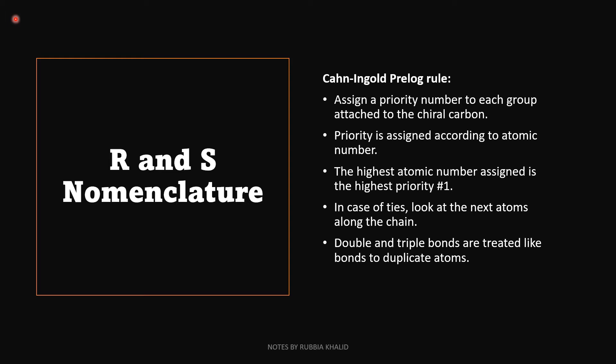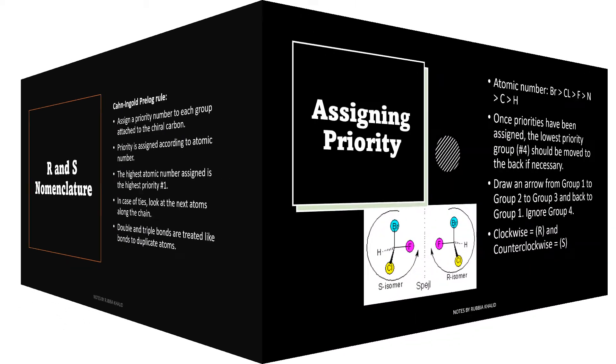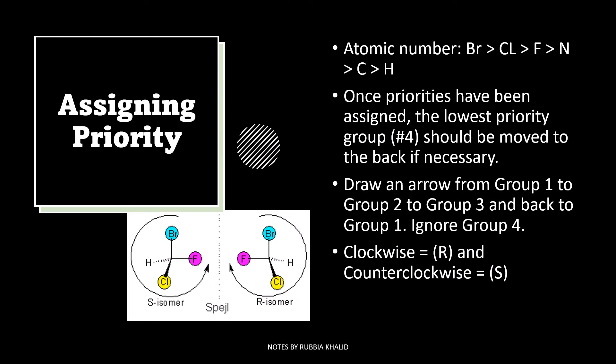In the case of ties, look at the next atom along the chain. Double and triple bonds are treated like the bonds to a duplicate atom. Next is assigning priority. Here you can see a sample priority order. Bromine has higher priority or higher atomic number than chlorine, so bromine has higher priority than chlorine. And then chlorine has higher priority than fluorine, and then nitrogen, carbon, and then hydrogen.